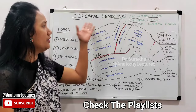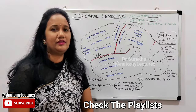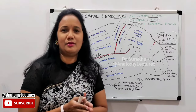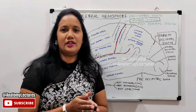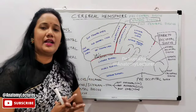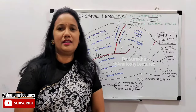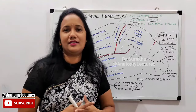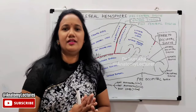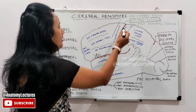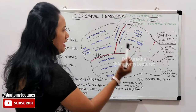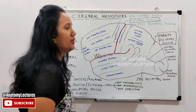The superolateral surface lies between the superomedial border and inferolateral border of the cerebral hemisphere. In order to divide the cerebral hemisphere into lobes, we take into account the fairly constant sulci — those which are constant in position in all brains. These sulci are the central sulcus, the lateral sulcus, and the parieto-occipital sulcus.